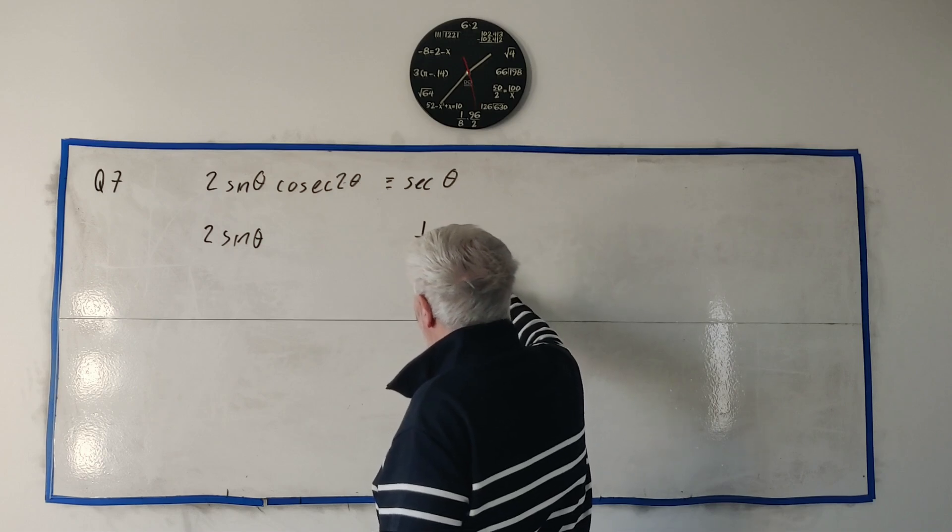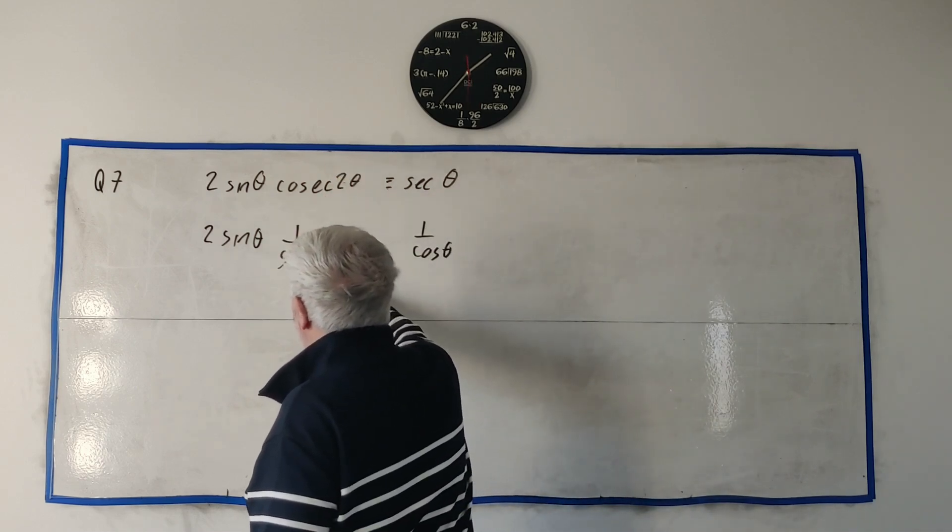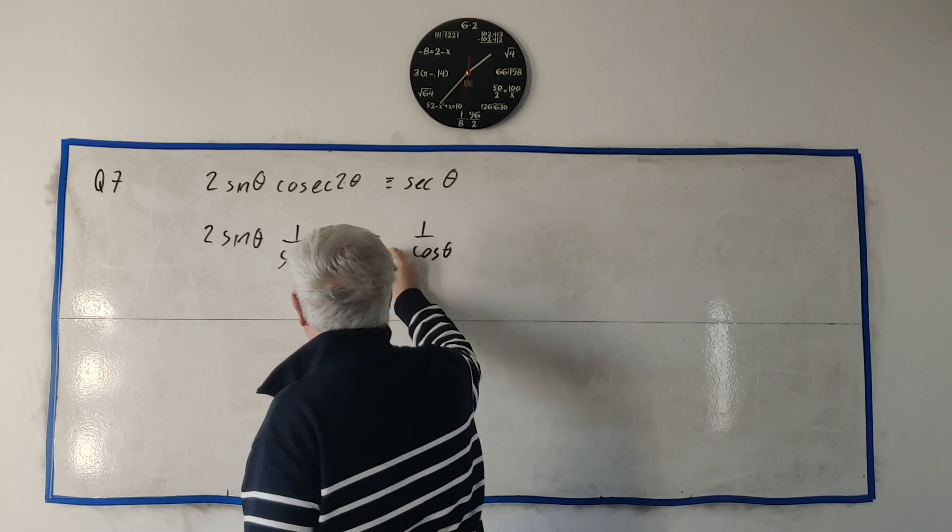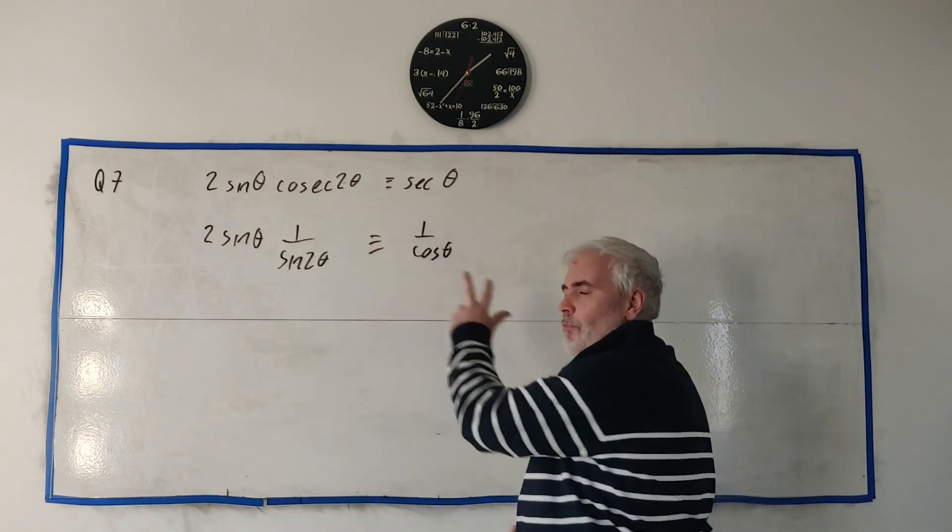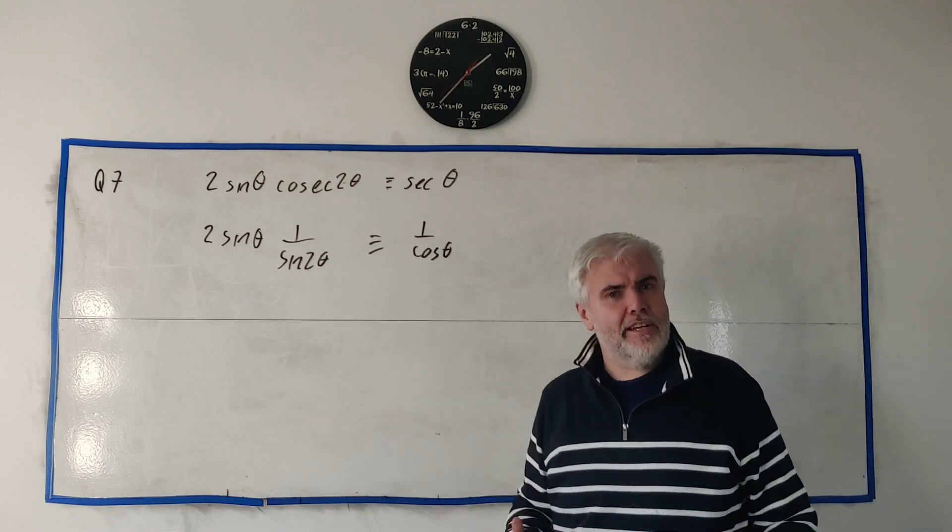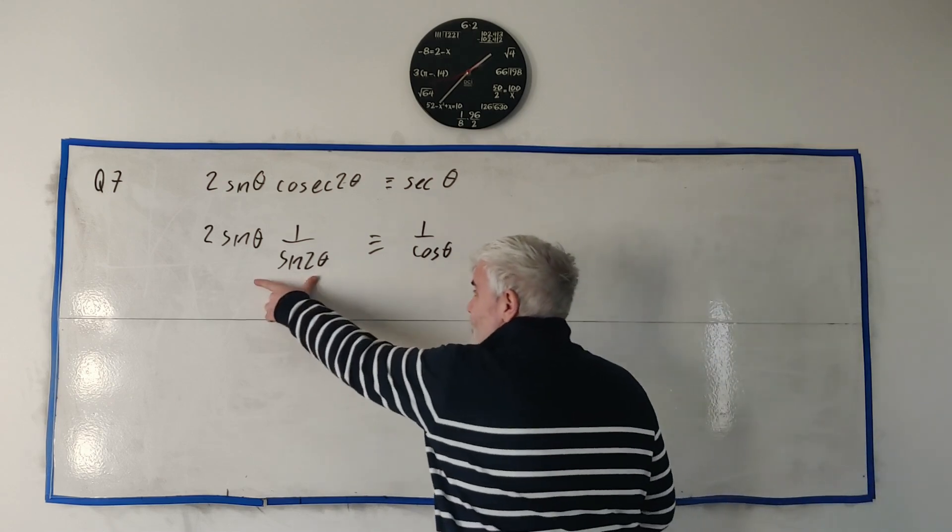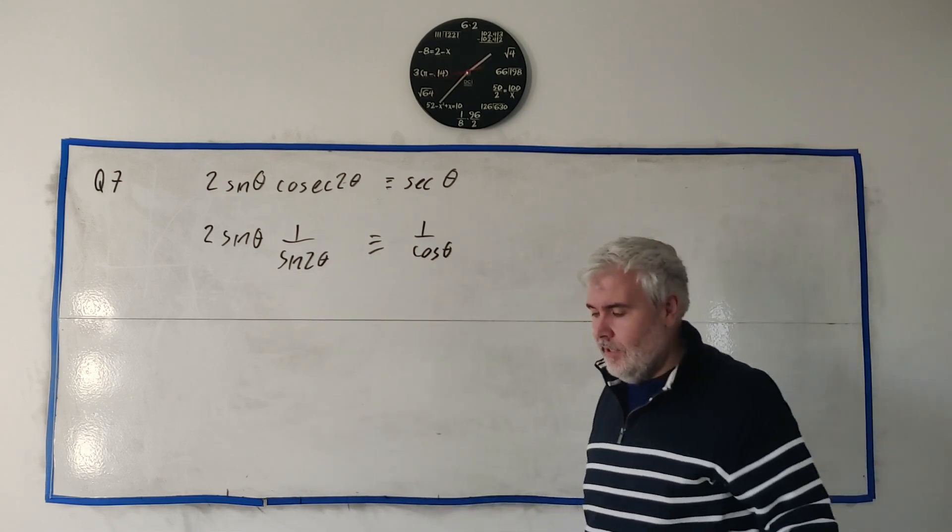So let's go ahead and do that first and then we'll solve the question from there. So secant, this is how I remember, is 1 over cosine, so this is the other one, 1 over sine 2θ. So instead of proving that, let's go ahead and prove this one. And what I often say is take the more complicated side and make it look like the simpler side.